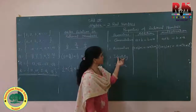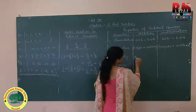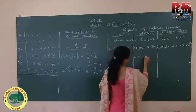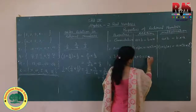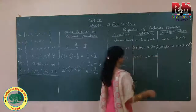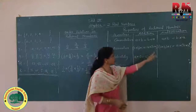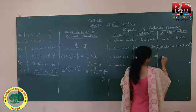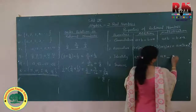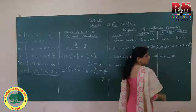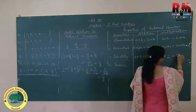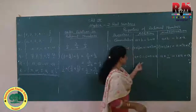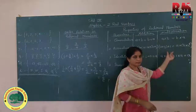Next is identity. Identity over addition: if we add 0 to a rational number A, the answer is A itself — A plus 0 equals 0 plus A equals A. This is called additive identity. Multiplicative identity: A multiplied by 1 equals 1 multiplied by A equals A. So 0 is called the additive identity and 1 is called the multiplicative identity. Keep this in mind — it is very important.